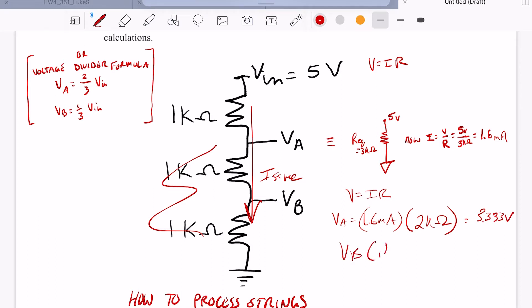And then Vb, by the same principle, will be the 1.6 milliamps times the resistance of Vb, 1.666 millivolts.